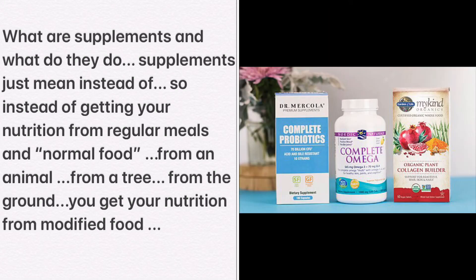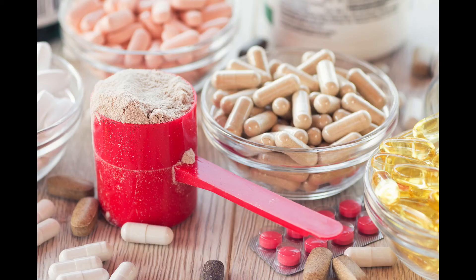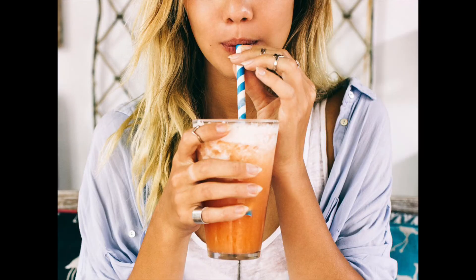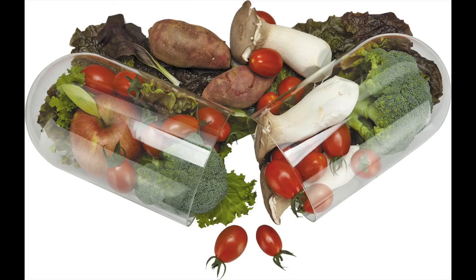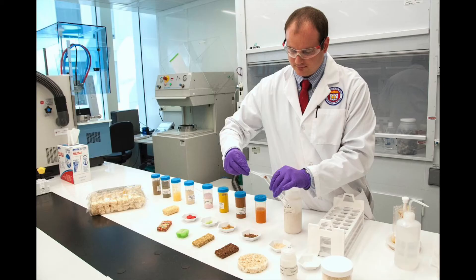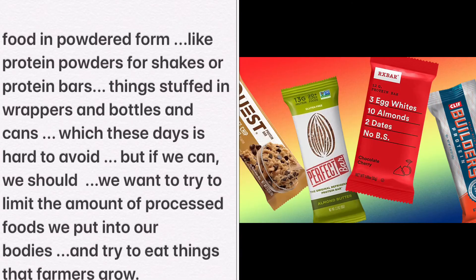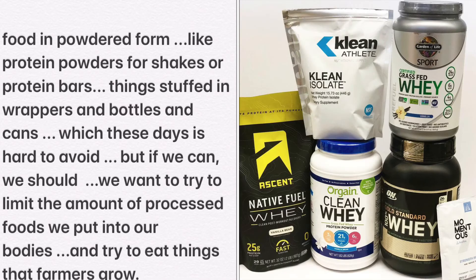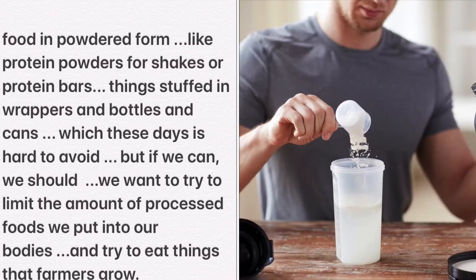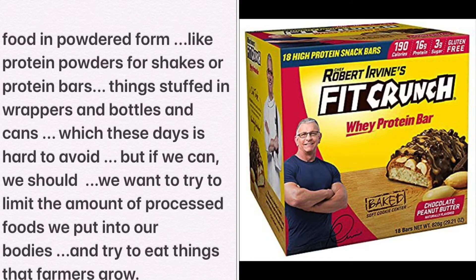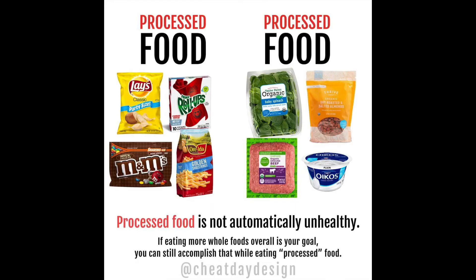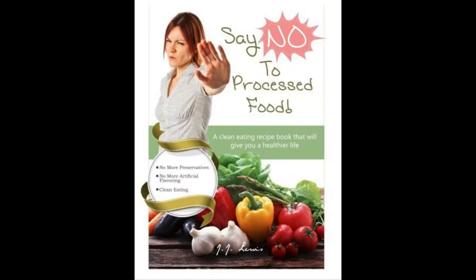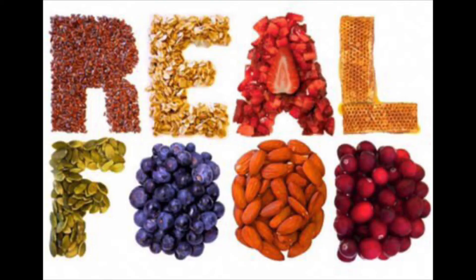What are supplements and what do they do? Supplements just mean 'instead of.' When you eat or drink supplements, you're not getting your nutrition from natural food like an animal, a tree, or the ground. Instead, you're getting your nutrition from modified food that comes from a lab — natural food changed into something quick and packaged. Things like protein powders for shakes or protein bars, things stuffed in wrappers, bottles, and cans. We want to try to limit the amount of processed food we put into our bodies and try to eat things that farmers grow. We will cover nutrition in more depth in other lessons.